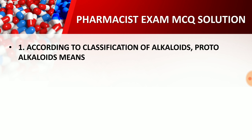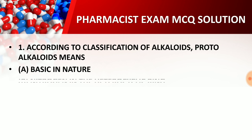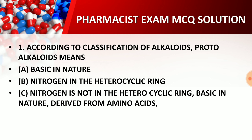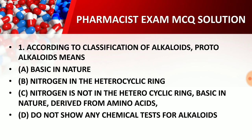Question one: According to the classification of alkaloids, 'protoalkaloids' means — option A: basic in nature; option B: nitrogen in the heterocyclic ring; option C: nitrogen is not in the heterocyclic ring, basic in nature, and derived from amino acids; option D: do not show any chemical taste for alkaloids. You can pause the video to think about the answer.